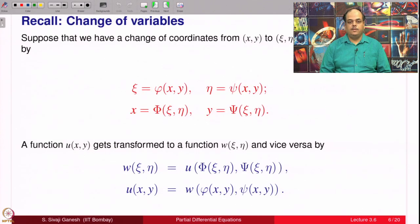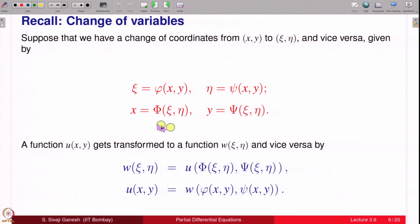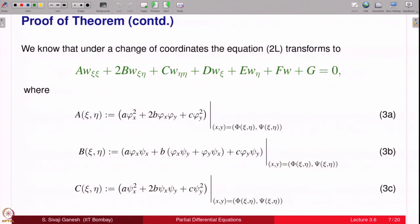Recall the change of variables ξ, η are given by two functions φ and ψ. If this gives rise to change of variables, you can invert back: x and y you can write in terms of ξ, η. We use capital Φ and capital Ψ for that. A function of (x,y) can be identified with a function of (ξ,η) and they satisfy these two relations. The 2L equation gets transformed to this equation where the coefficients a, b, c alone are listed here because they are the only things which are important as far as the type of an equation is concerned.